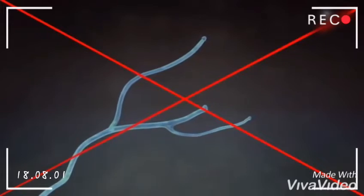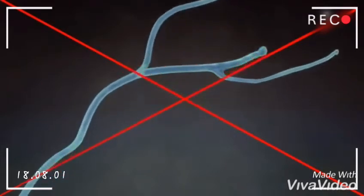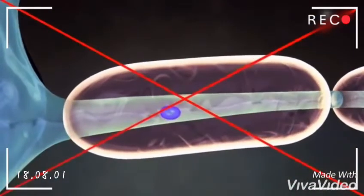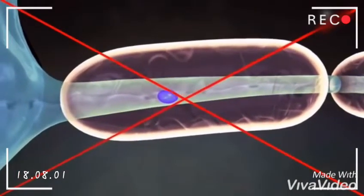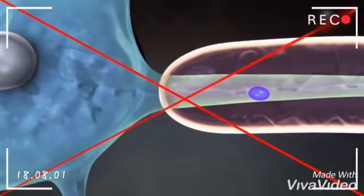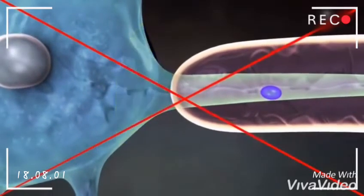The dendrites receive impulses from the adjoining neurons. The other extension from the cell body or soma is a single branch extension called an axon. Each axon is comprised of a cone-shaped base called an axon hillock that arises from the soma.